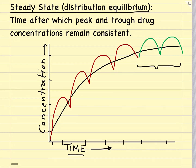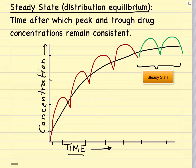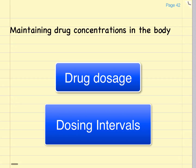Steady state, or distribution equilibrium, is the time after which the peak and trough drug concentrations remain consistent — the point at which drug accumulation equals drug excretion by the body. As shown in the graph, this is typically about four to five half-lives. For a drug to be effective, drug levels must accumulate in the tissues or fluids at a therapeutic range, and drug entry must be balanced by the rate the drug leaves the body, which is controlled through drug dosages and dosing intervals.